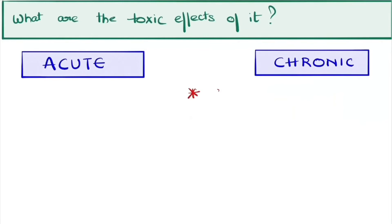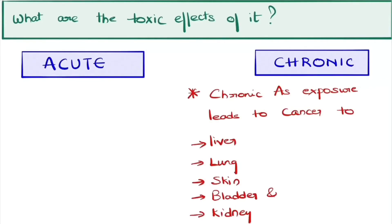Constant exposure to arsenic leads to cancer in various organs like liver, lung, skin, bladder, and kidneys. So after knowing the effects, how do we diagnose it? What are the various available options for diagnosis?